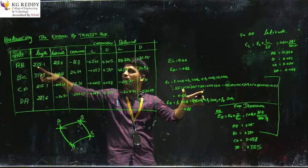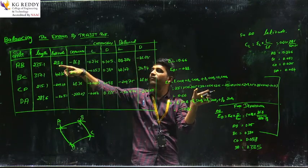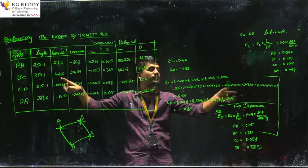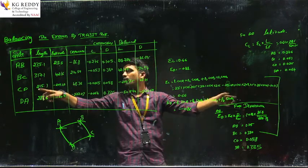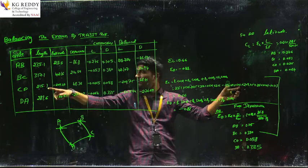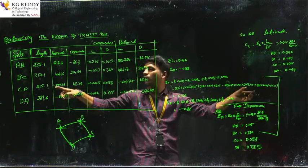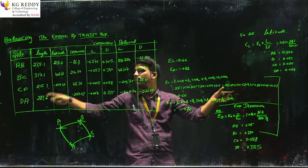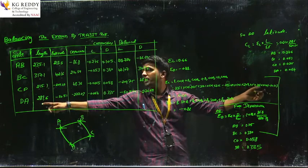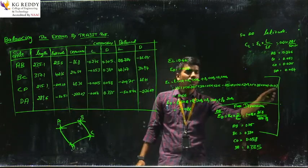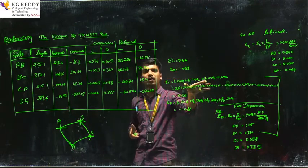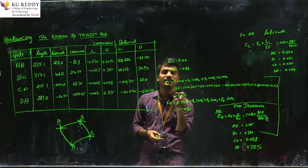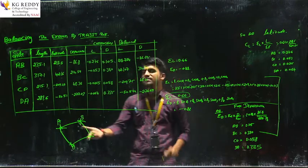What is L1 here? 235.1 and cos θ1 gives 218.5, plus L2 = 317.1 and cos 42.16, next 215.1 into cos θ giving 209.49 — this is negative, so plus into negative converts to negative. Next plus 281.6 into 50.51. This is the mathematical formula to find out the latitude. Sigma L equals 0.66, which is the error of latitude of this traverse.